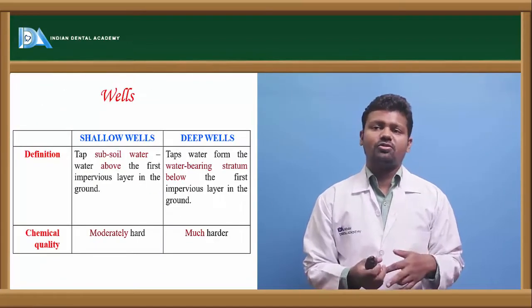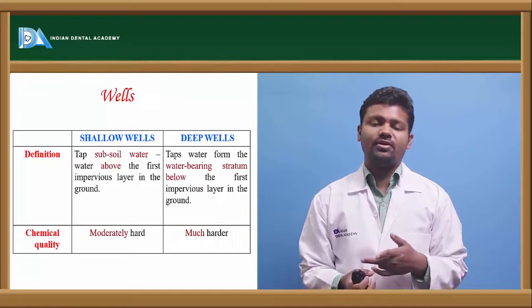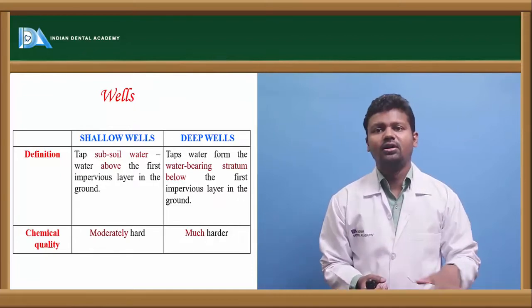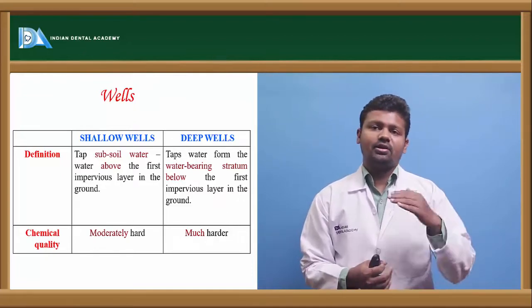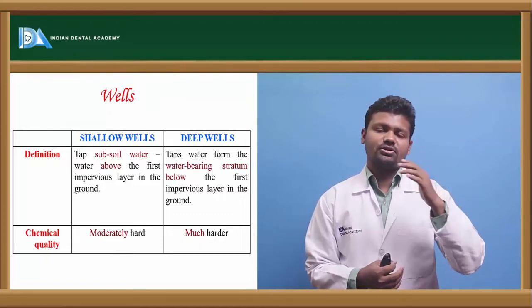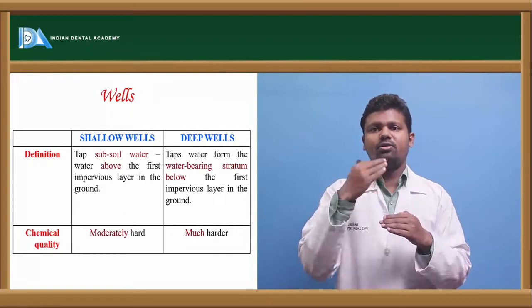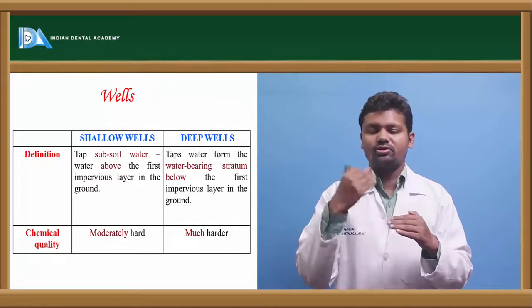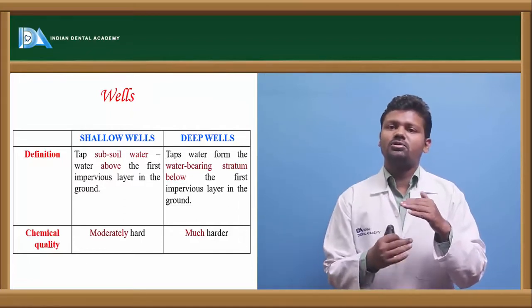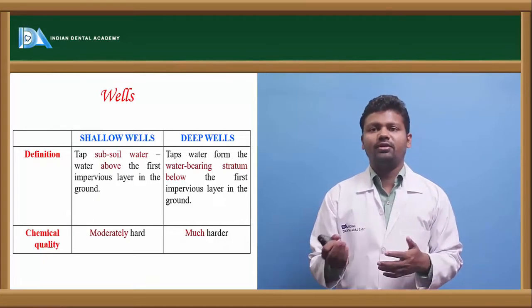Coming to the definition of wells - shallow wells and deep wells. There is an impervious layer in the land. The water above this impervious layer is called shallow wells. It is topsoil water. The water which is below this impervious layer is derived from deep wells.